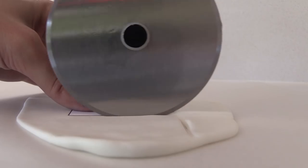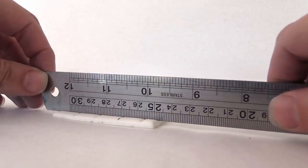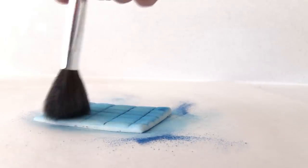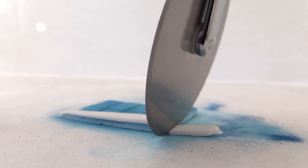For the garage door, cut a square of white then make your indents across and down. Brush it over with blue luster dust and add a strip of white across the top.